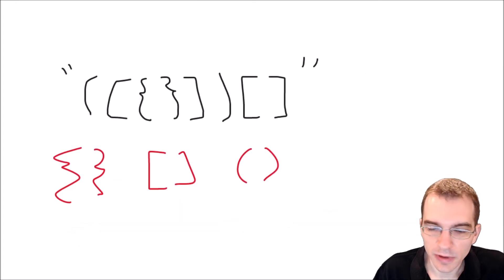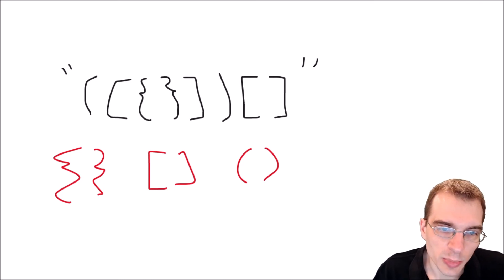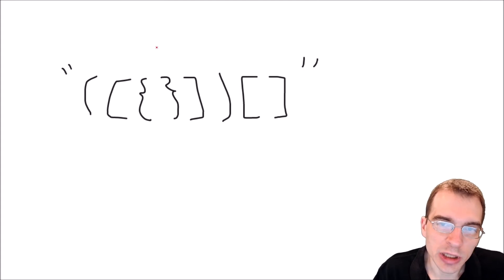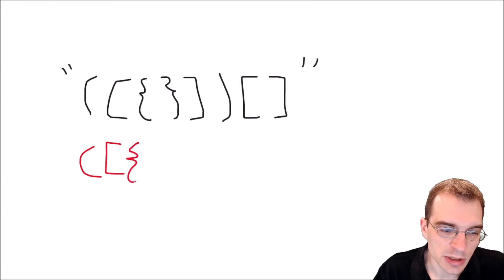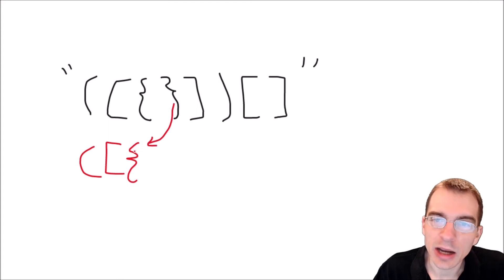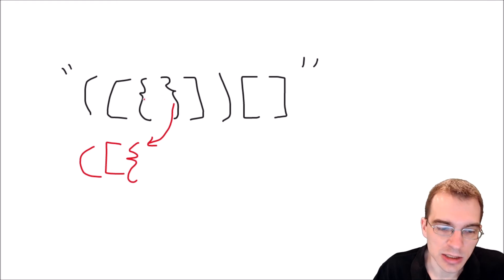The important thing to note is that anytime we see a closing character, it has to close the last opening character that was seen. In this string, we see the first opening, then a second opening, then a third opening. But when we see the first closing character, it has to match whatever the last opening character seen was. So when we see the closing bracket, we check our little stack — is that there? It is. So we remove it from the stack and move on.